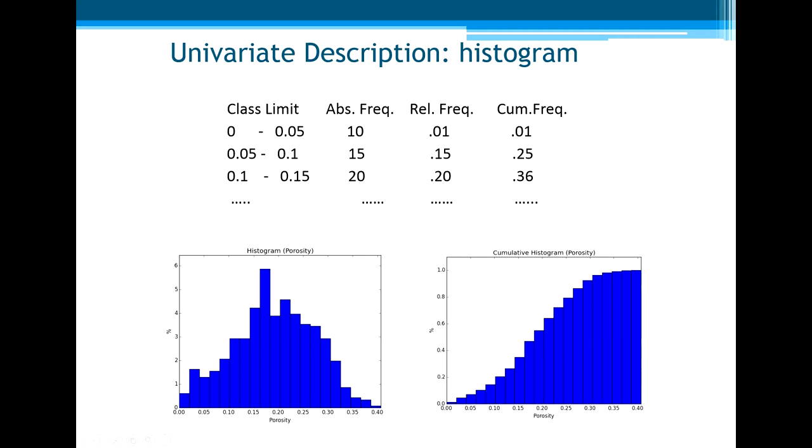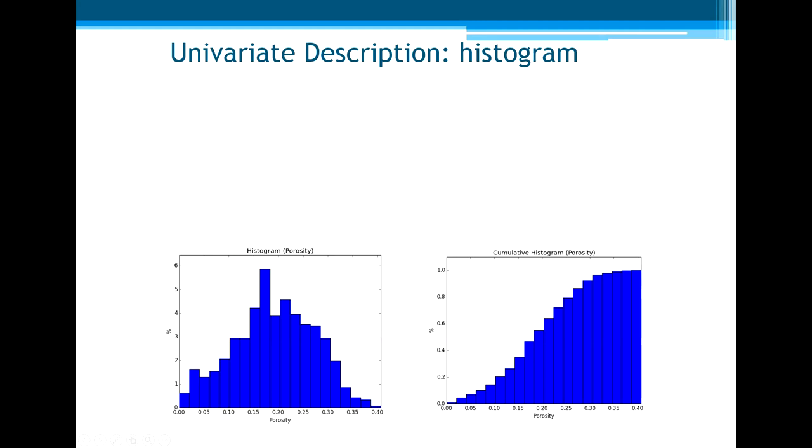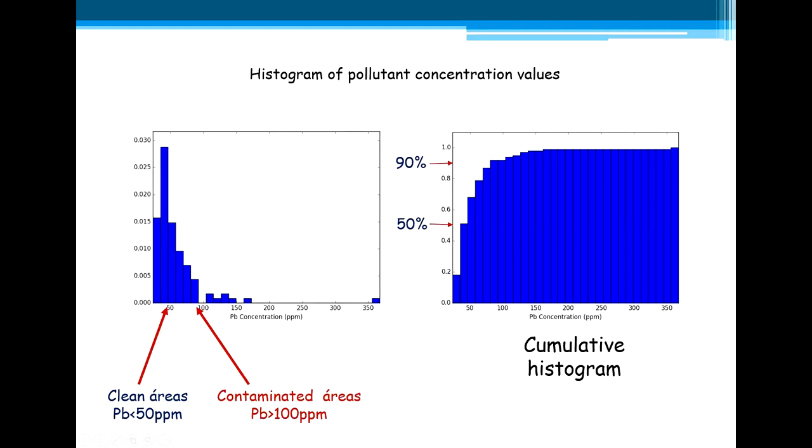Now, related to the previous example, you can see, for example, the class lower than 0.10, between 0.10 and 0.20, and the class greater than 0.2. And the cumulative histogram gives us straight away the proportion, relative proportion or relative frequency of the values below, for example, 0.10.